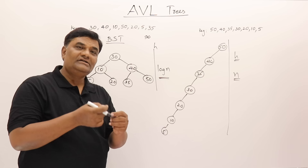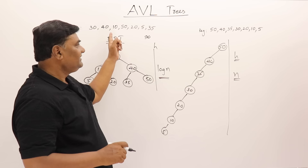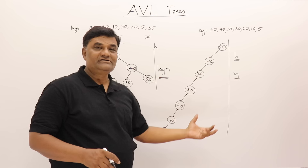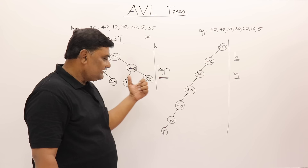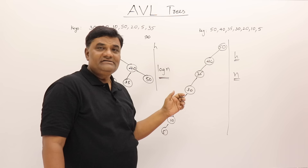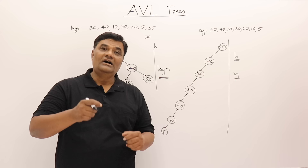The height depends on how key elements are inserted. If height is log n, search time is log n; if height is n, search time is n, similar to linear search. For example, searching for 5 in the skewed tree requires all seven comparisons. This is the drawback of binary search tree — height is not under control.